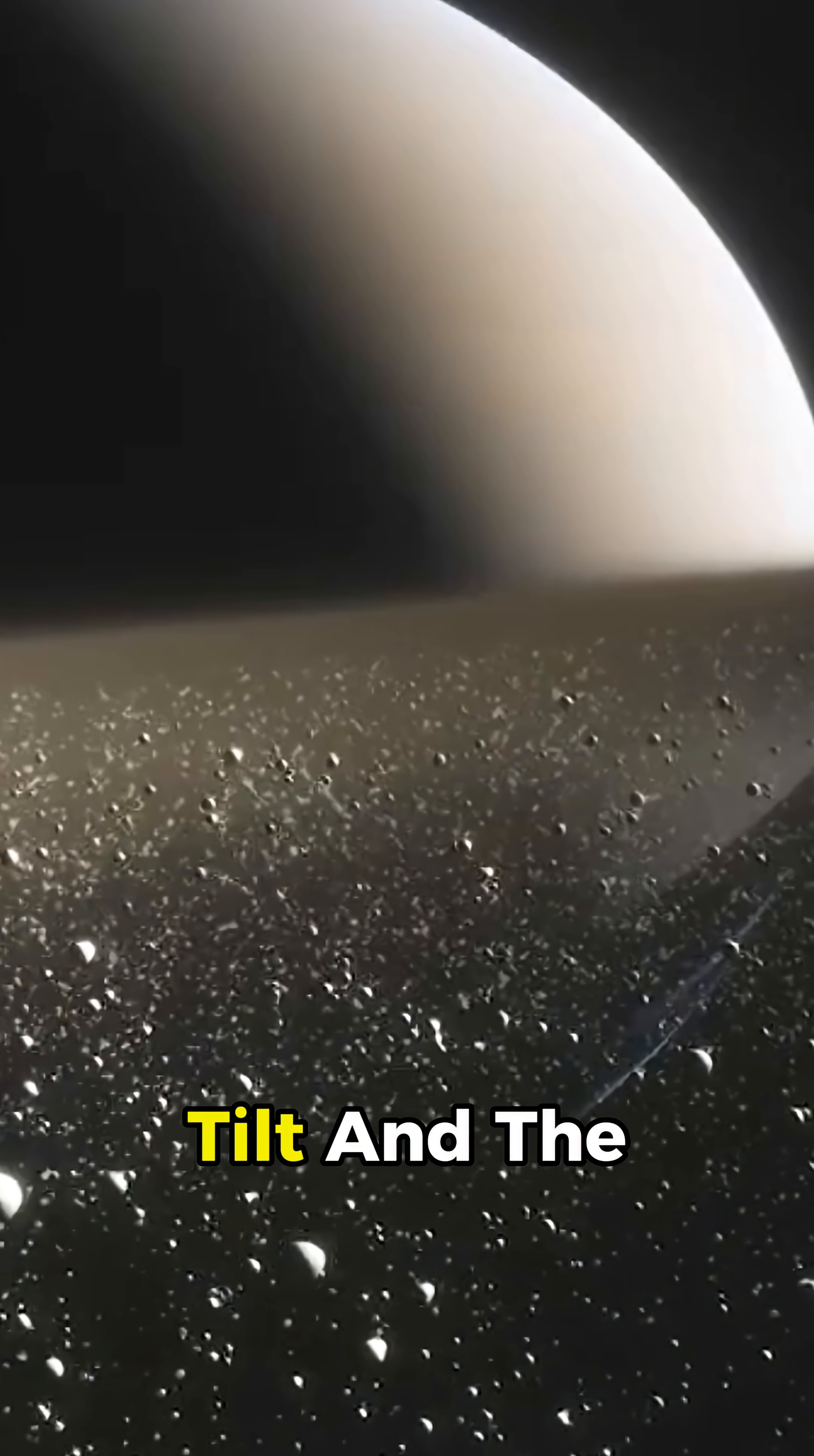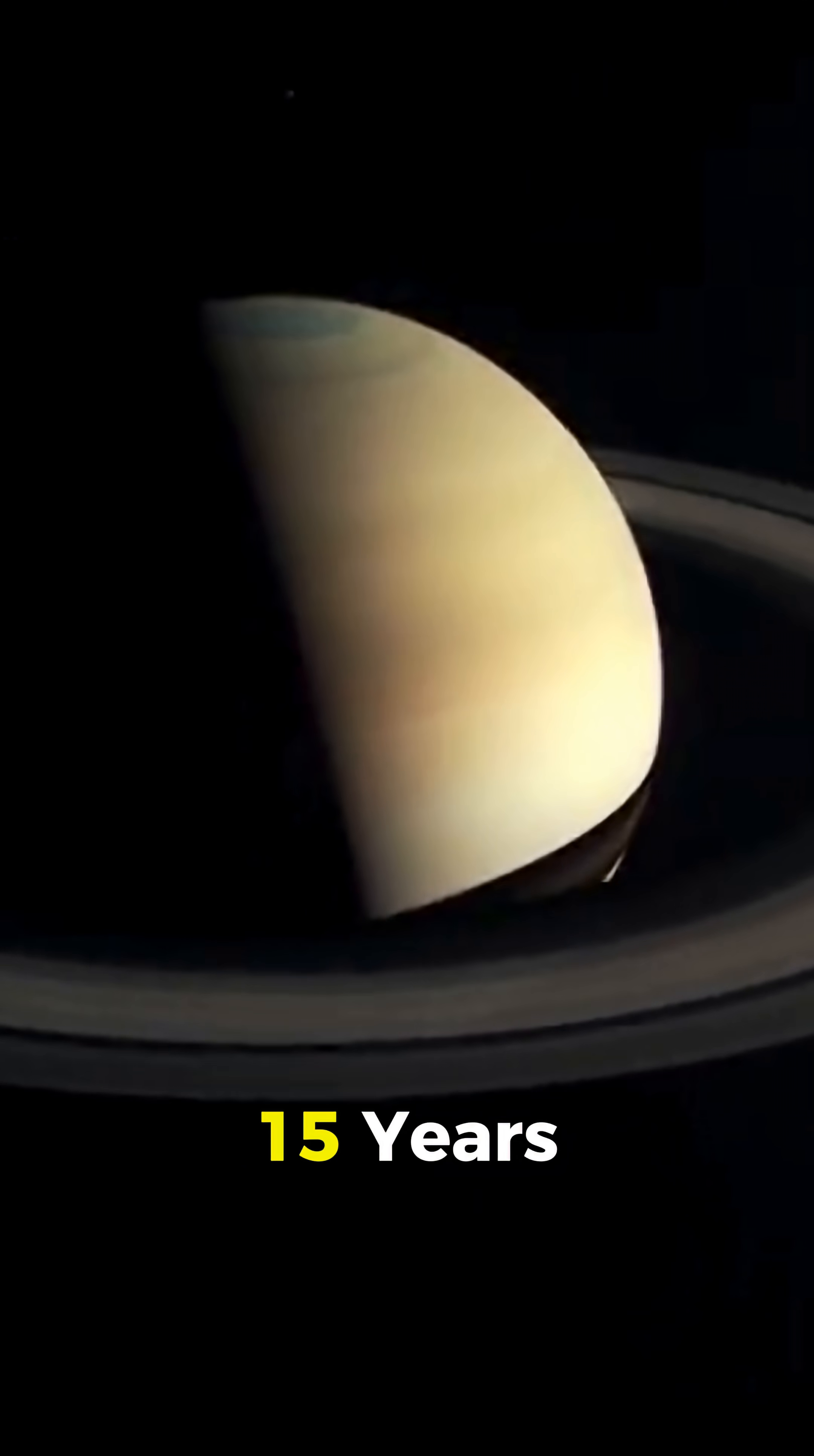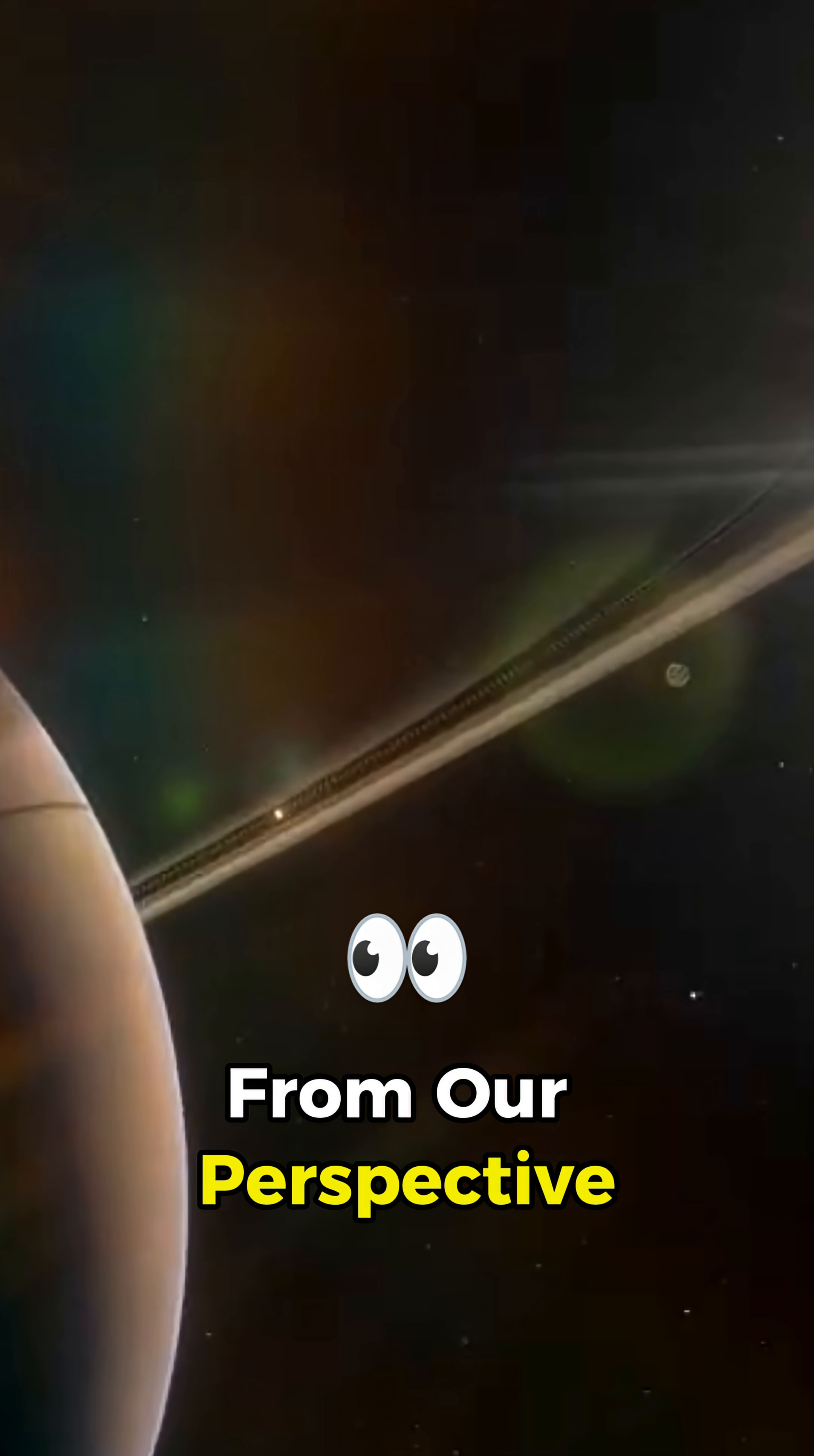Because of Saturn's tilt and the way it orbits the sun, there are rare times every 13 to 15 years when Earth lines up such that the rings turn edge on from our perspective.